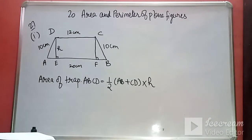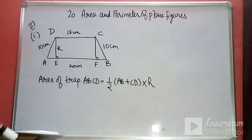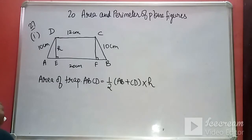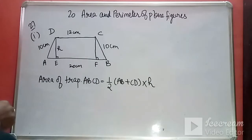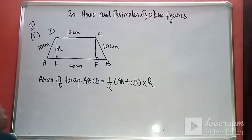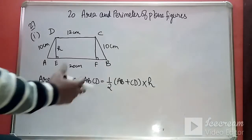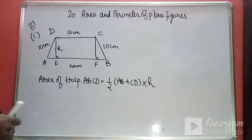Today we will discuss how to find the area of a trapezium. In figure ABCD, the lengths of AB, BC, CD, and AD are given, and since AD equals BC, it is a case of an isosceles trapezium. We have to find the area of trapezium ABCD. We know that the area of a trapezium is half the sum of the parallel sides multiplied by the height, and the parallel sides are AB and CD.